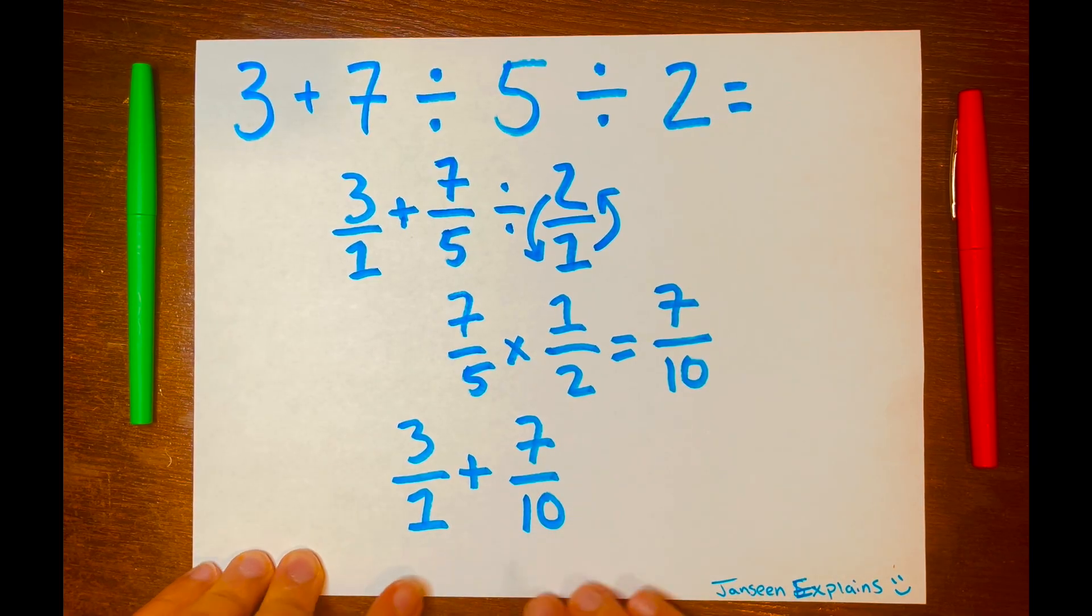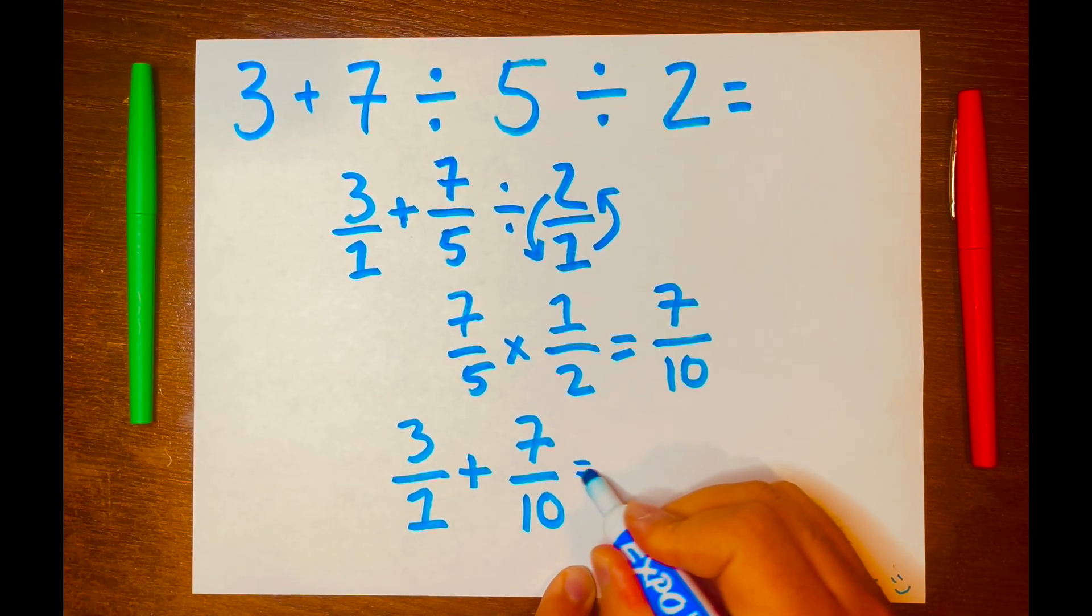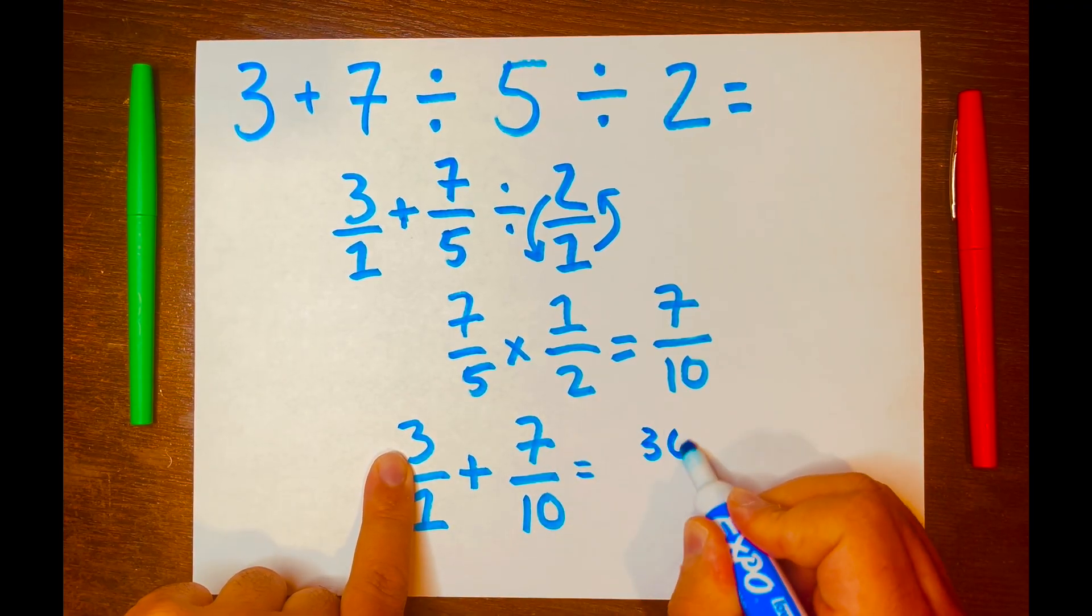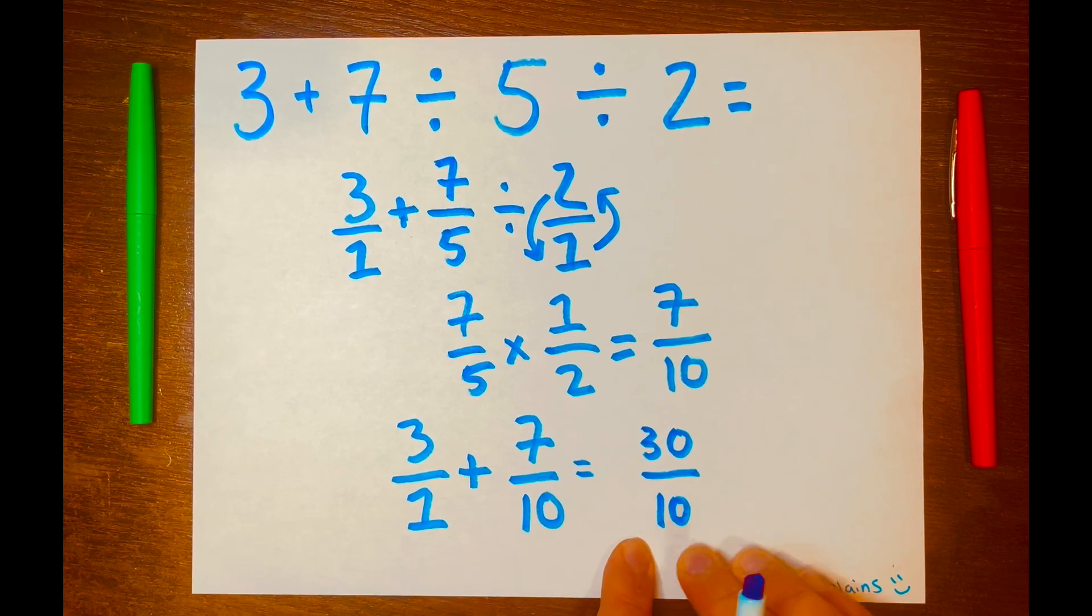And I run out of room here, so I'm going to write it here. Let me just write it here. So 3 times 10 is 30 over 10, because that is our new denominator.